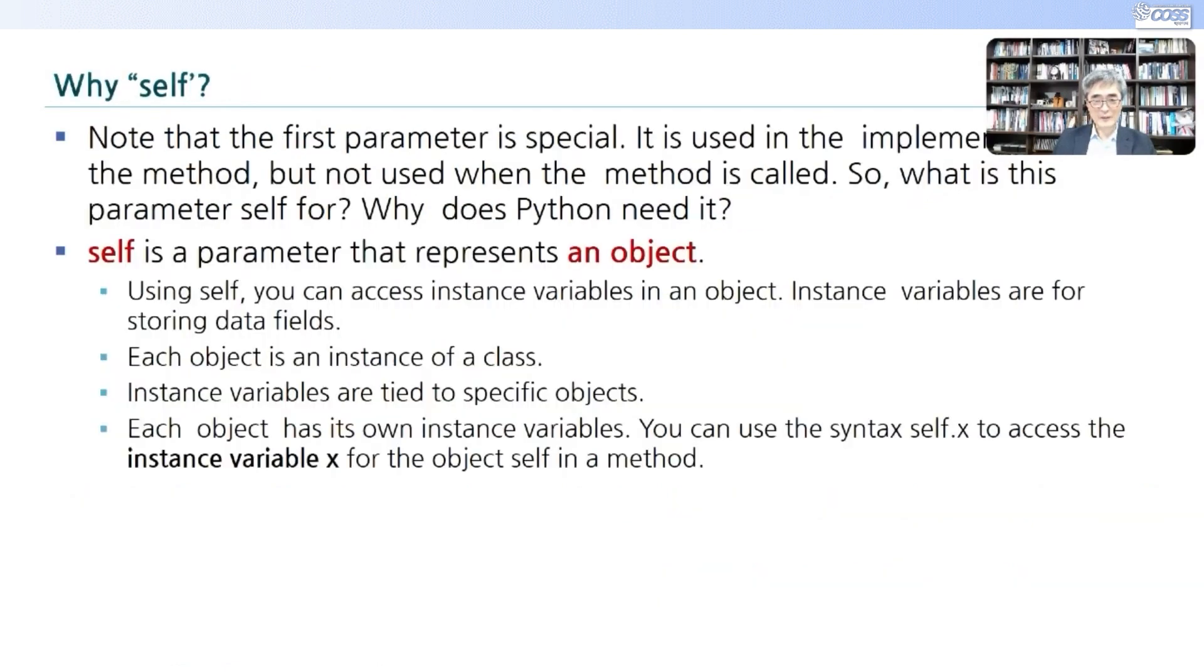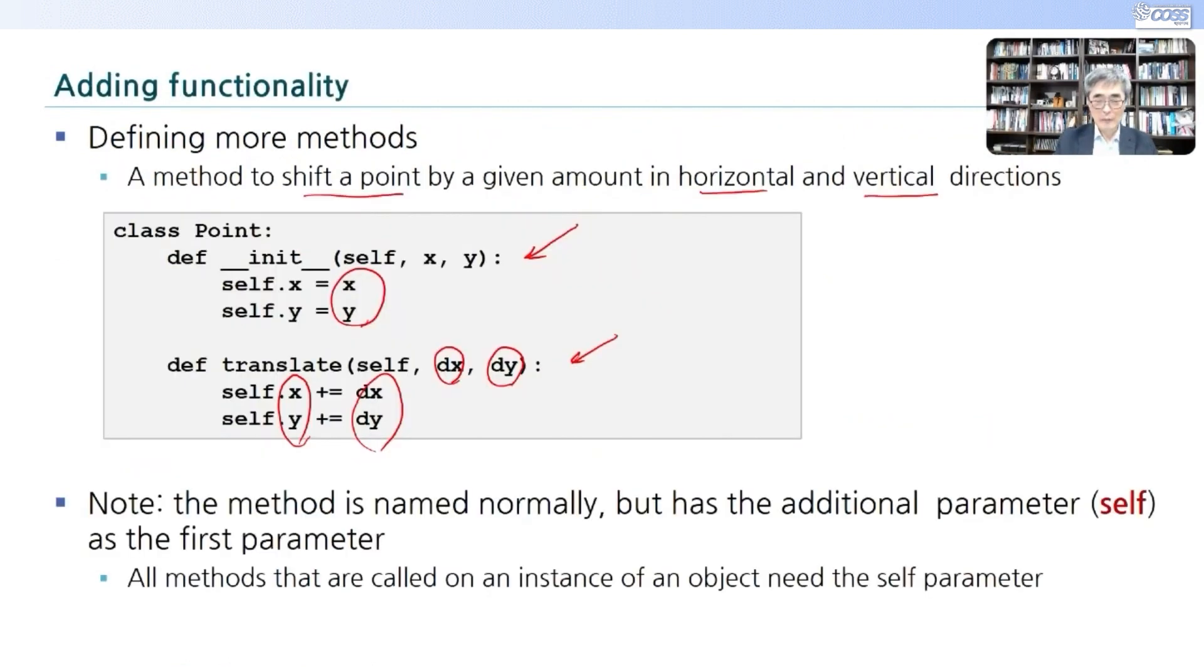근데 왜 셀프가 들어가 있습니까? 셀프에 대해서 다시한번 그 앞에 슬라이드로 가볼까요. 여기 셀프라는게 들어오고 있죠? 그 다음에 여기 셀프에 저장하는거 아니에요. 셀프 X, 셀프 Y를 업데이트 하잖아요. 우리가 포인트를 하나 만든다고 해봐요. 5,5. 요거를 P라고 하고 P를 갖다가 플러스 1, 플러스 1만큼 이동시킨다고 해봐요. 6,6로. 그러면 P.Translate 트랜슬레이트 그 다음에 1,1 요렇게 합니다. 요렇게 호출합니다.